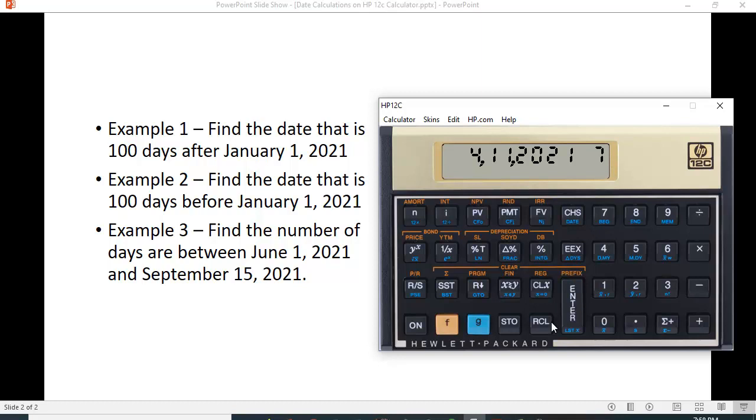You could also find the date that is 100 days before January 1, 2021. So again, I'm going to put in the date the same way, 1.01, 2021, enter, and I'm going to put in 100, and I'm going to change the sign to negative.